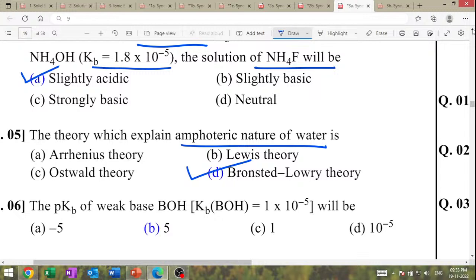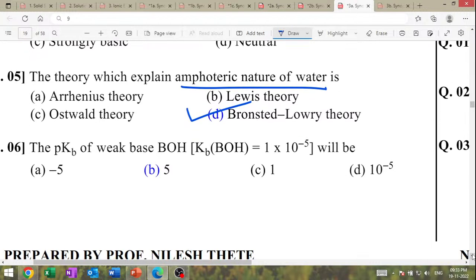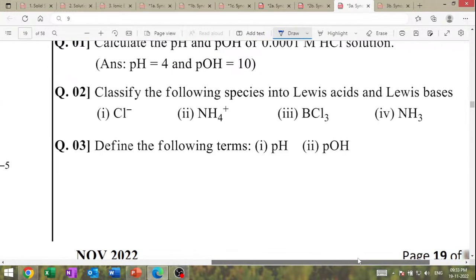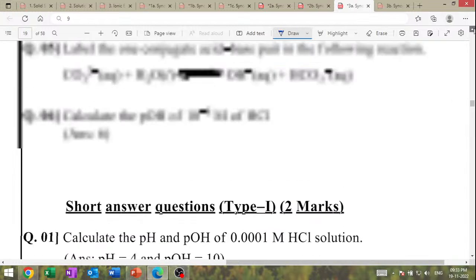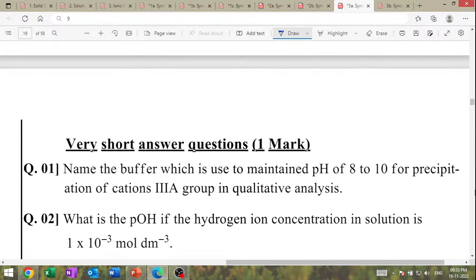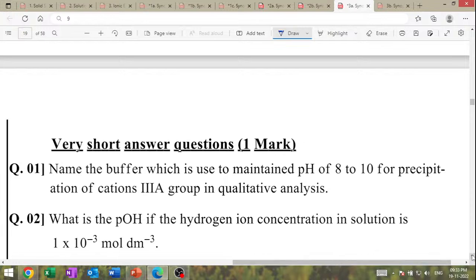The theory which explains amphoteric nature of water is Brønsted-Lowry theory. The Kb of the weak base is given — find pKb value. Name the buffer used to maintain pH 8 to 10.